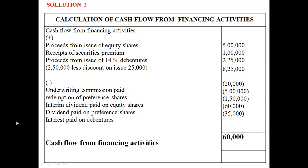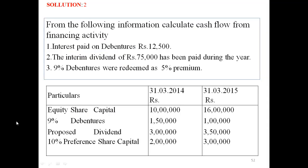A similar exercise is given for financing activity. Interest paid on debentures 12,500 is a cash outflow. Interim dividend of 75,000 has been paid — also a cash outflow. These are standard financing activity items to include in the calculation.